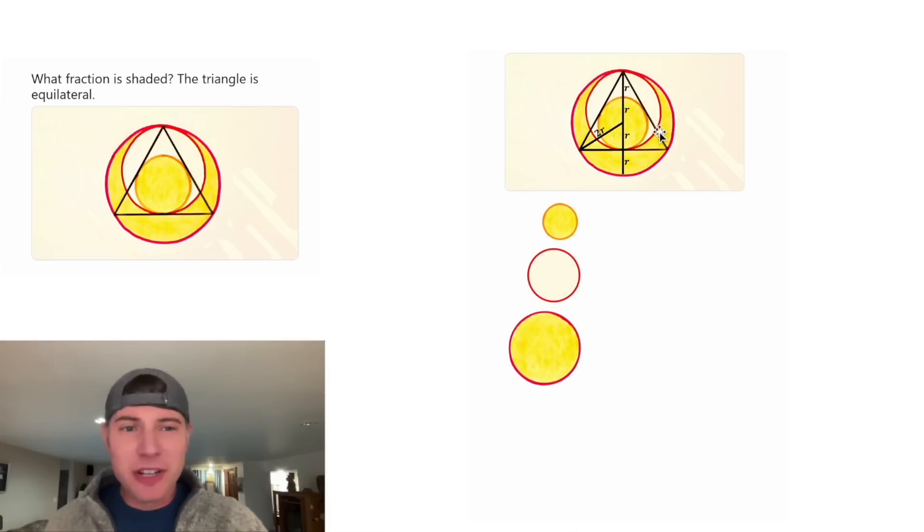So now let's focus on our three circles. We have a small circle, a medium circle, and a large circle. Let's find the radius of each of them. The little circle has a radius of r, and the big circle has a radius of 2r.